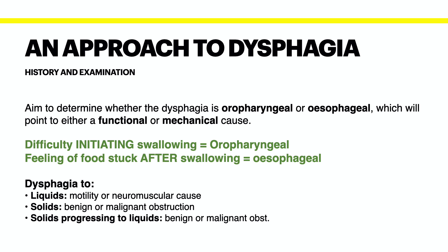Does the patient describe any coughing, choking, or regurgitation of food nasally? Aspiration of food is an important complication of dysphagia. Does the patient describe problems with swallowing liquids or just solids? Dysphagia to liquids is typically a motility or neuromuscular cause, whereas dysphagia to just solids suggests a benign or malignant obstruction. If the patient describes dysphagia to solids then progressing to dysphagia to liquids, this again suggests a benign or malignant obstruction that is increasing in size.